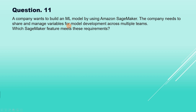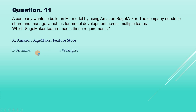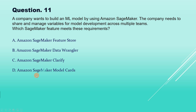A company wants to build an ML model by using Amazon SageMaker. The company needs to share and manage variables for model development across multiple teams. Which SageMaker feature meets these requirements? The options are: Amazon SageMaker Feature Store, Amazon SageMaker Data Wrangler, Amazon SageMaker Clarify, Amazon SageMaker Model Cards.